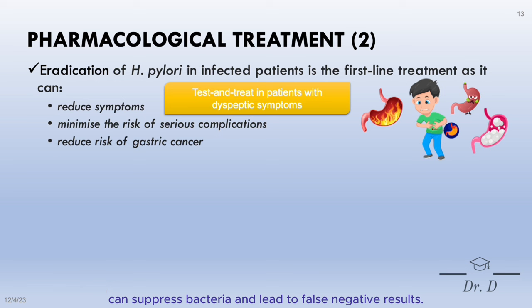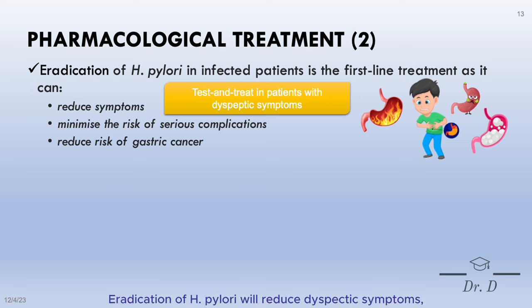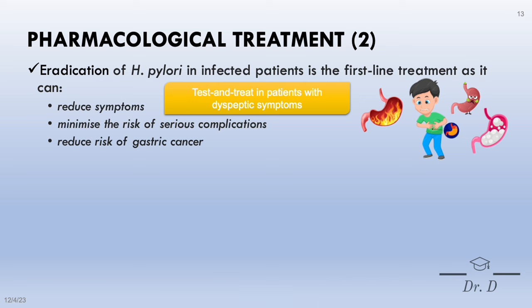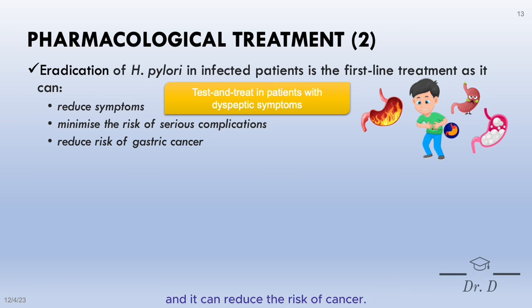The stool antigen test, or SAT, is another test that can be used. Eradication of H. pylori will reduce dyspeptic symptoms, minimize the risk of serious complications such as chronic gastritis and mucosa-associated lymphoid tissue lymphoma, and can reduce the risk of cancer.